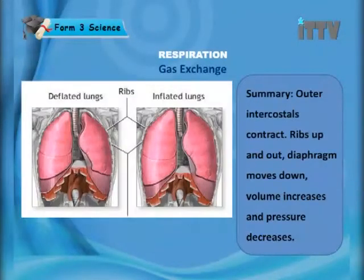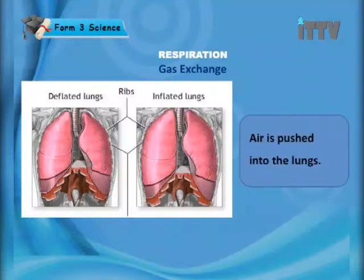A summary of the inhalation process: outer intercostals contract, ribs up and out, diaphragm moves down, volume increases and pressure decreases, air is pushed into the lungs.